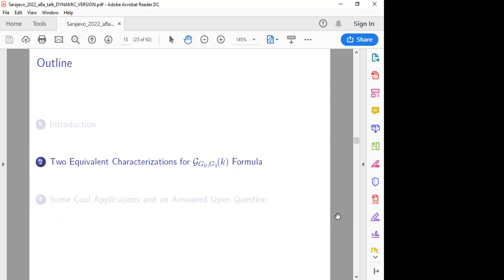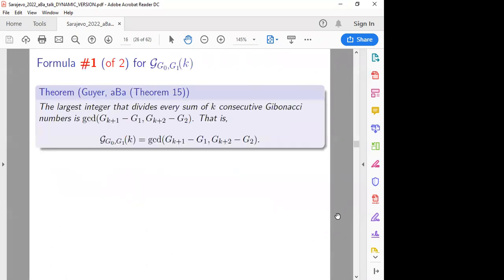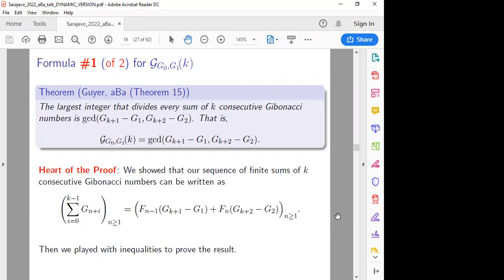But we basically... Well, you'll see how it is because Dr. Wook was going to ask us the question. How did Dan and Ava prove those four theorems on the previous slide? Good question, Dr. Wook. We made two equivalent categorizations for the Gypsum of K. Remember, this symbol means the GCD of every sum of K consecutive Gibranacci numbers. Sum of every K consecutive Gibranacci numbers. So the first formula of number one of two is the following. The largest integer that divides every sum of K consecutive Gibranacci numbers is given by the GCD of these two terms. Just plug in your K value for those things in your Gibranacci sequence.